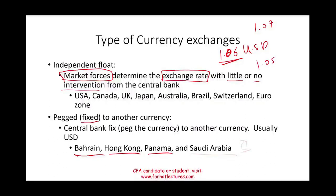Why would a country like Saudi Arabia peg their currency to the US dollar? Simply put, they generate most of their revenue in USD because oil is priced in USD. This makes it easy to plan government budgets and expenditure. Although they have their own currency, its value is fixed in terms of the US dollar. Each country has their own reasons, but the key point is that certain currencies are pegged to the USD.